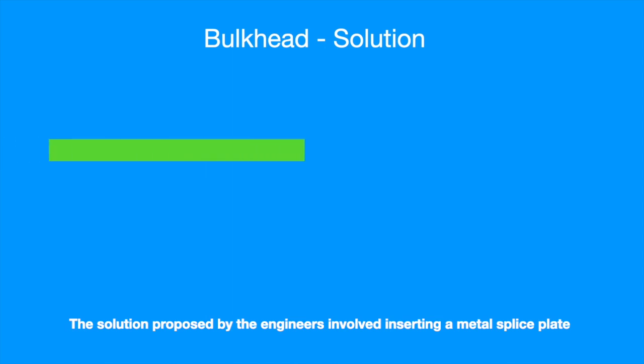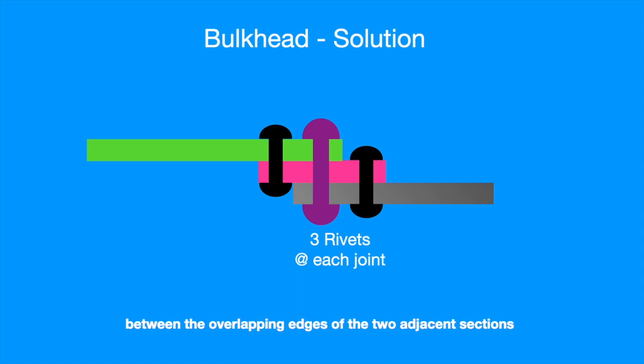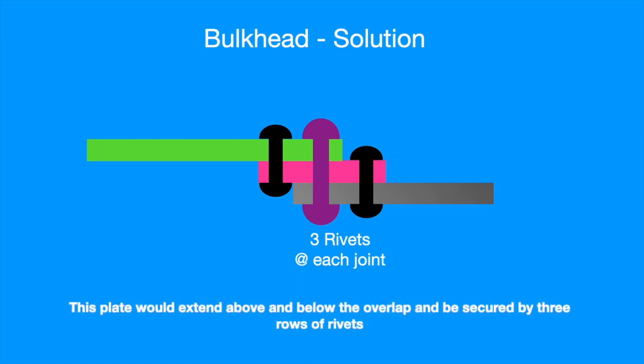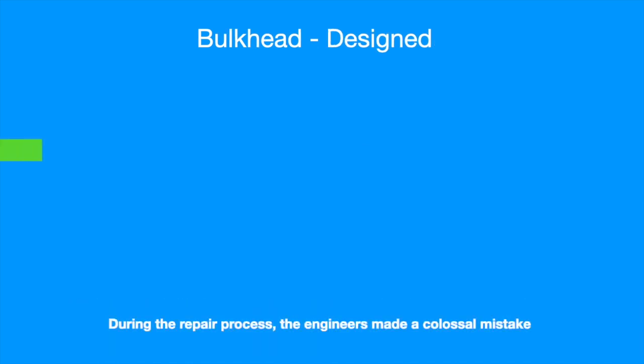The solution proposed by the engineers involved inserting a metal splice plate between the overlapping edges of two adjacent sections. These plates would extend above and below the overlap and be secured by three rows of rivets. By doing this, both skin sections would be attached to the splice plate by two rows of rivets.